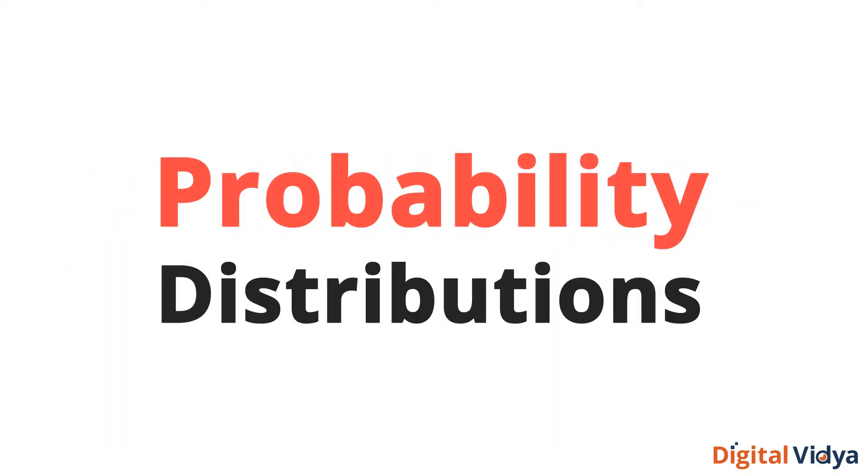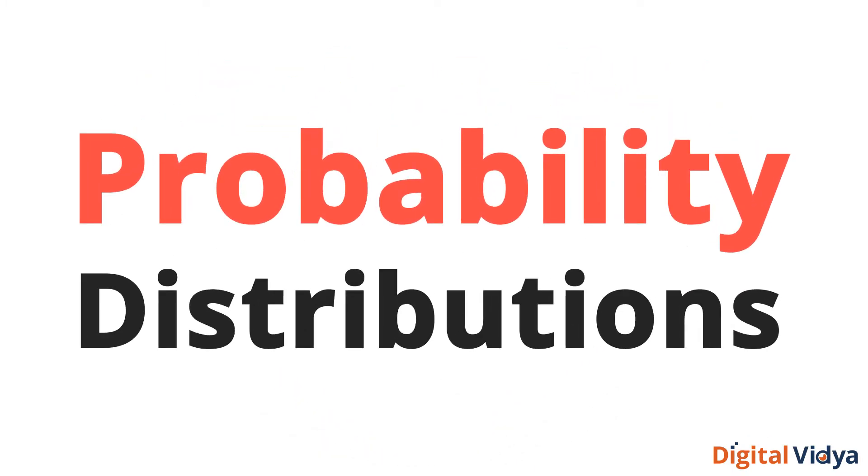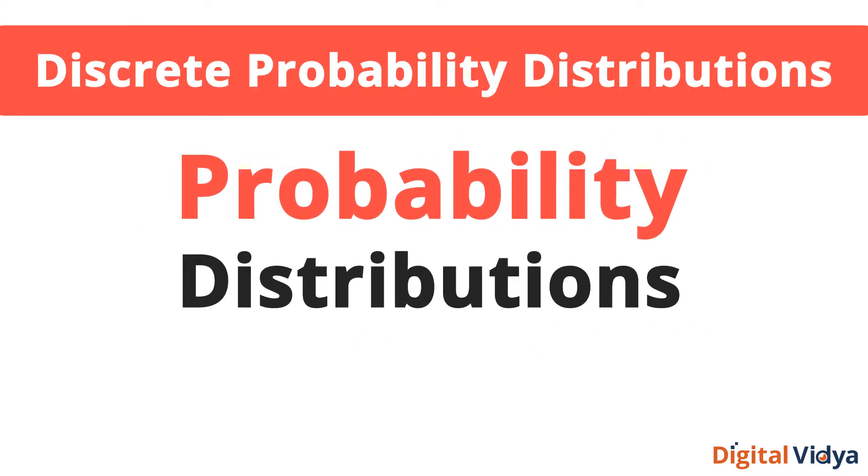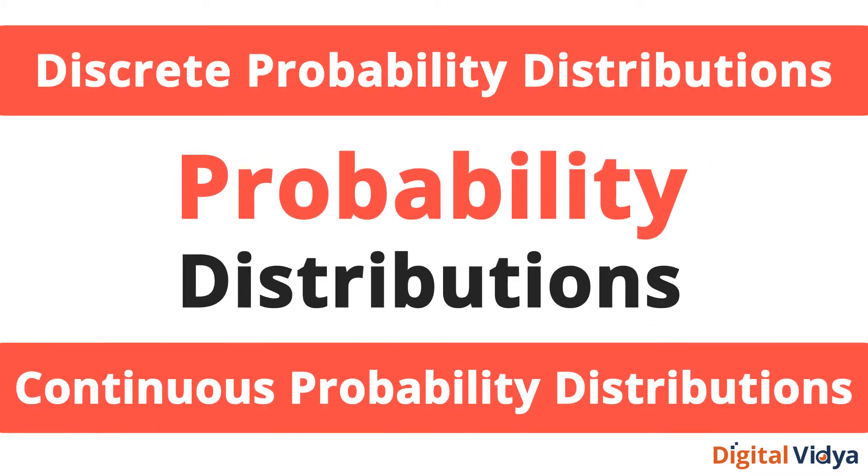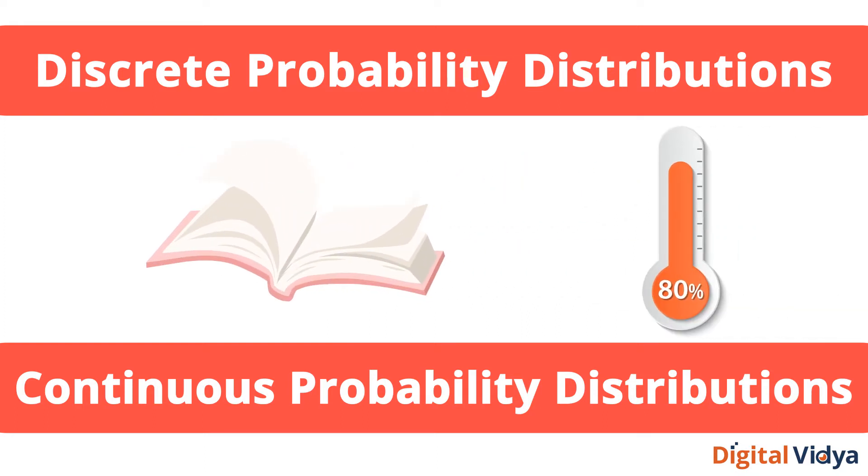Probability distribution is a statistical concept that tells you what the probability of an event happening is. All probability distributions can be classified as discrete probability distributions or as continuous probability distributions depending on whether they define probabilities associated with discrete variables or continuous variables.